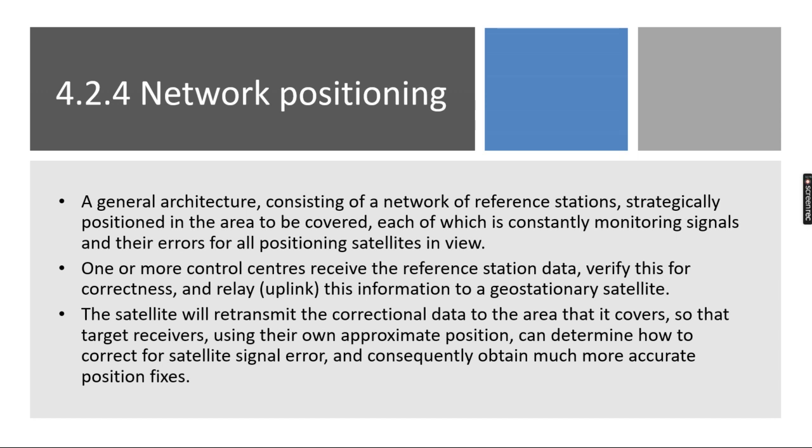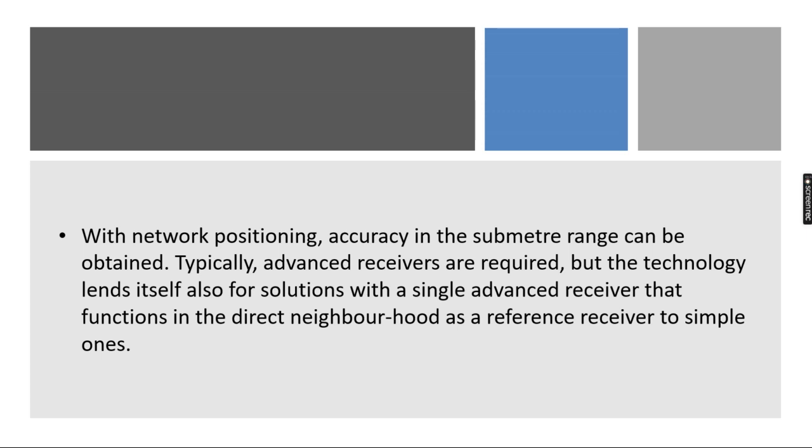We can use uplink method where the information is sent to the geostationary satellite. The satellite will transmit the corrected data to the area that it covers so that the target receivers, using their own approximate position, can determine how to correct for the satellite signal errors and get proper or accurate position data.